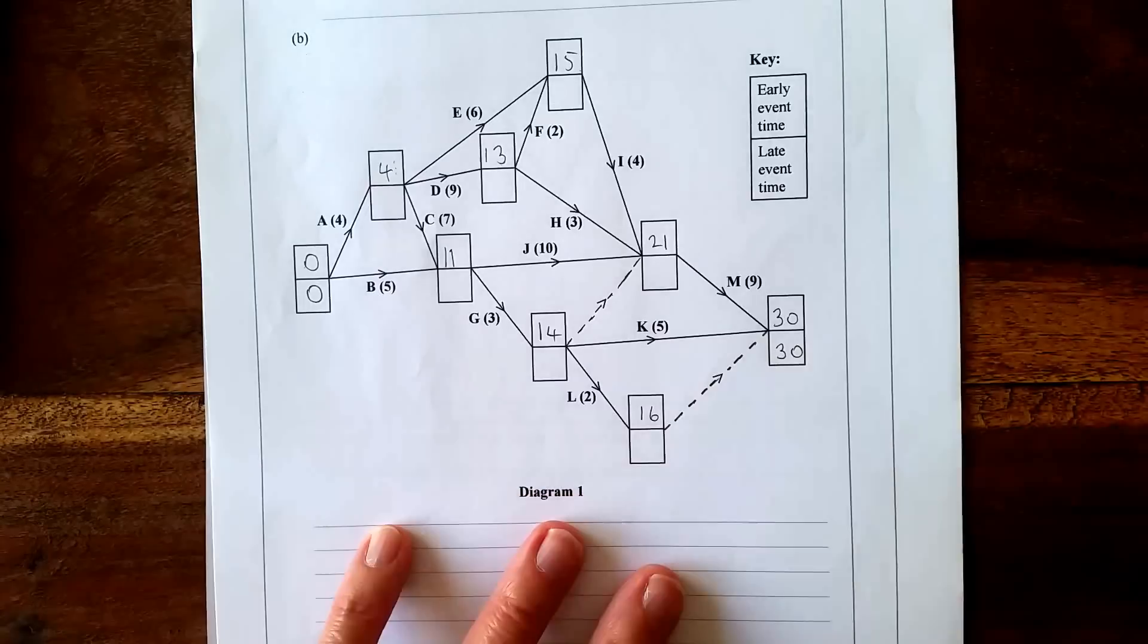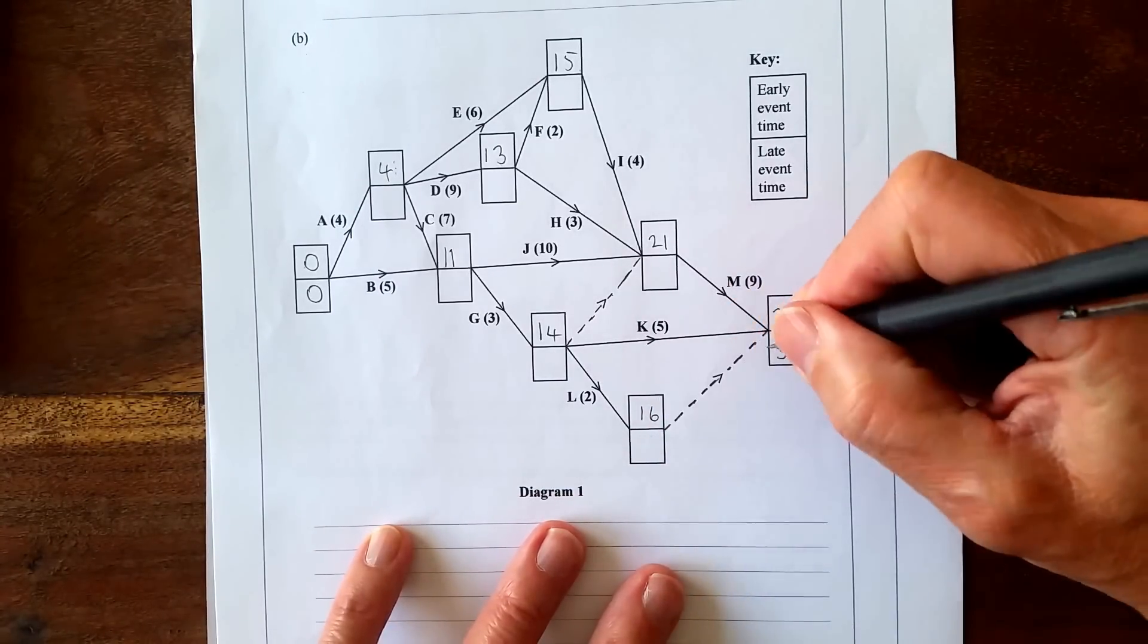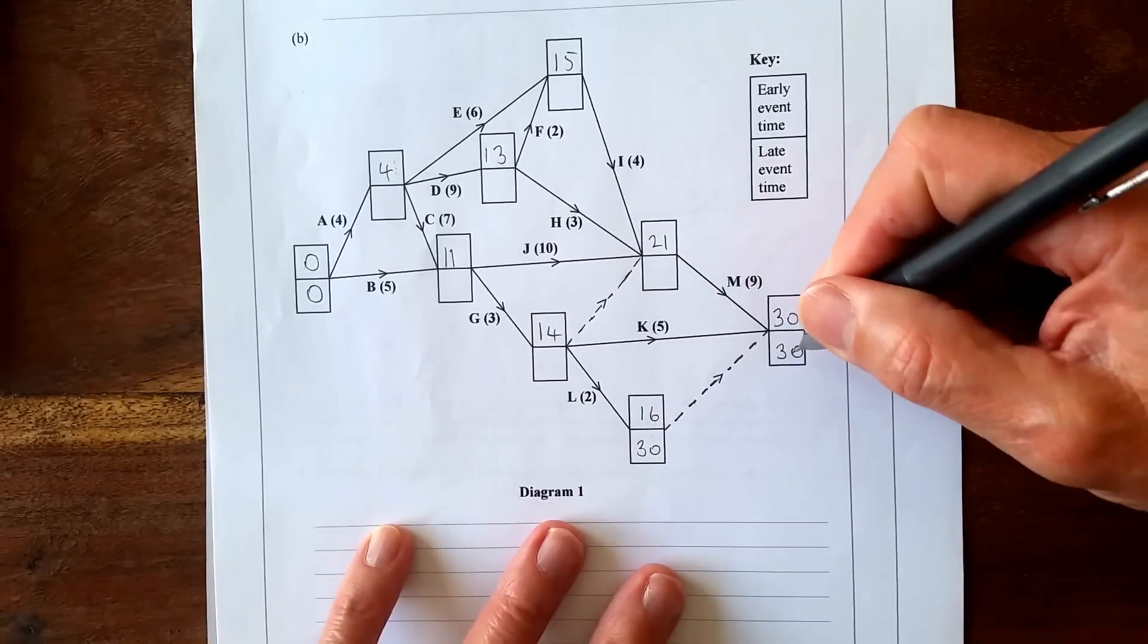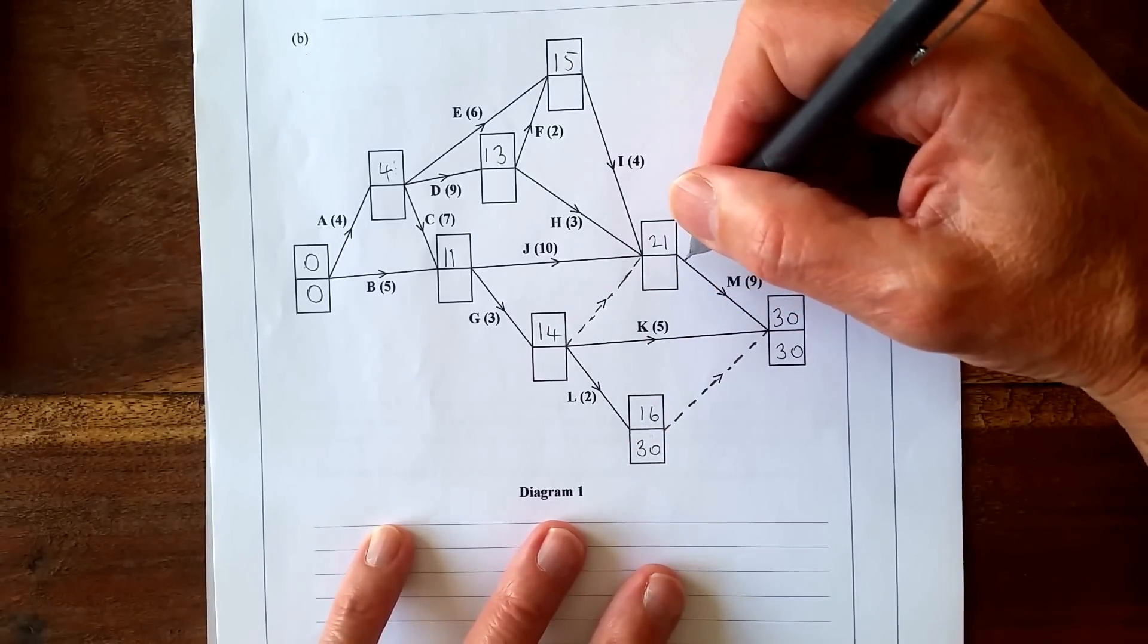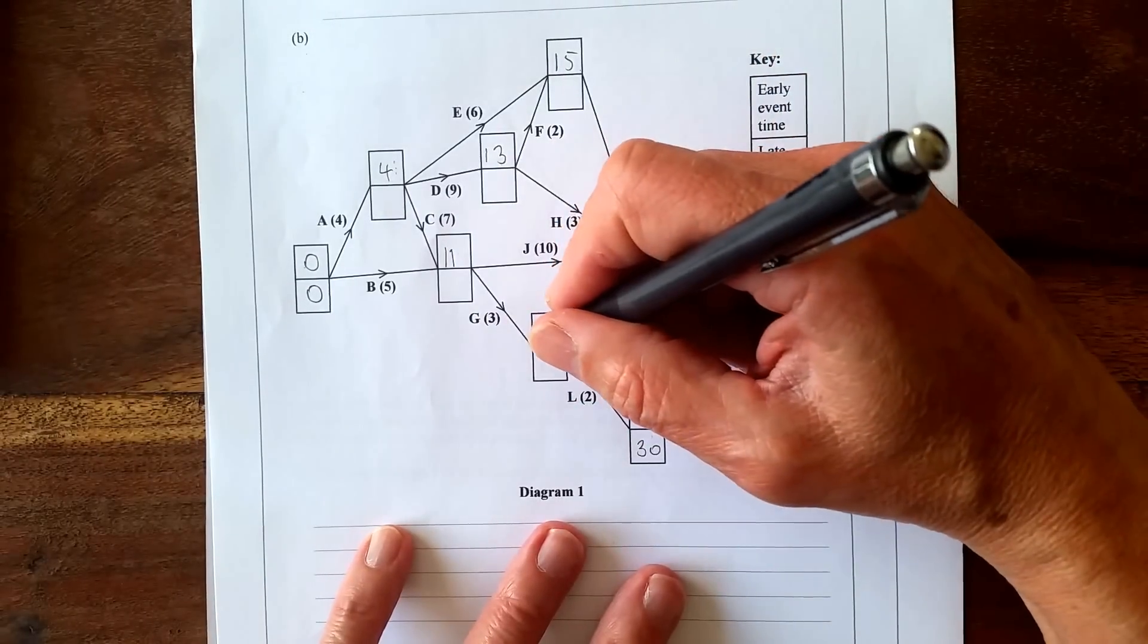Now when you get to the end, you put 30 here and you work backwards, and you want the smallest going back. So let's subtract this one because it's a dummy, there's no time, still 30. And then 30 take away 9 is 21, and 30 take away 5 is 25.